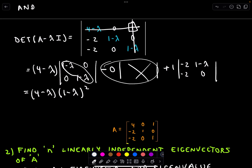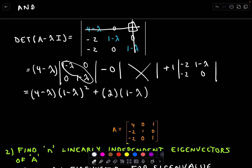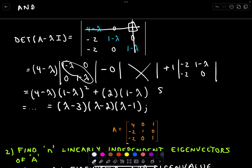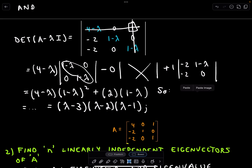To compute the two-by-two determinant, we multiply along the diagonals: one minus lambda times one minus lambda gives one minus lambda squared, then subtract the product of the other diagonal, which is just zero. The middle term is zero, and then we have plus one times the result, where negative two times zero is zero and negative two gives a positive two times one minus lambda. So we get the characteristic polynomial. Collect like terms and simplify.